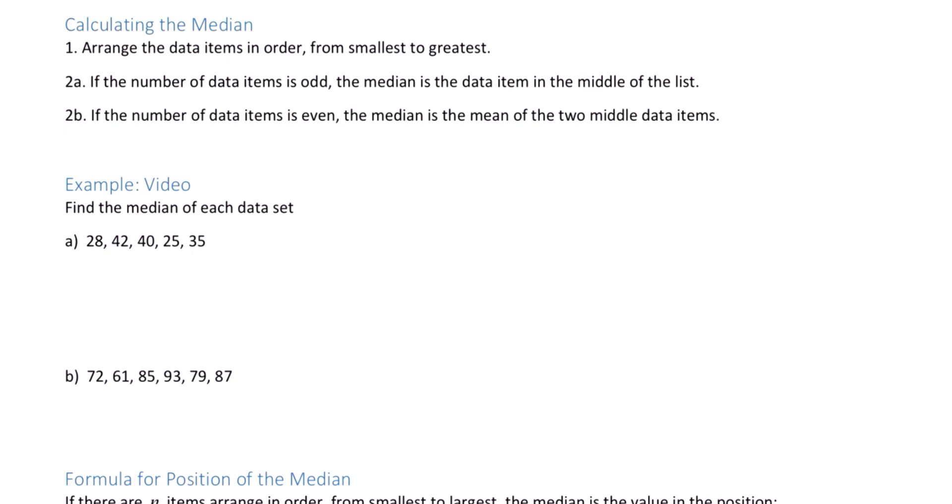Looking at example a, first recognize that the numbers are not listed in order. It's easy to forget to put them in order, so be very careful. We'll start by putting them in order: 25, 28, 35, 40, and 42.